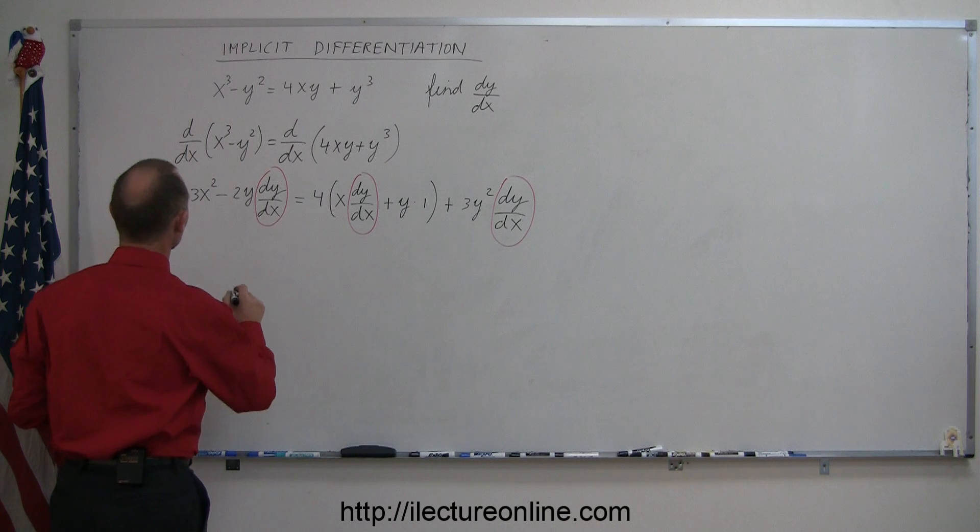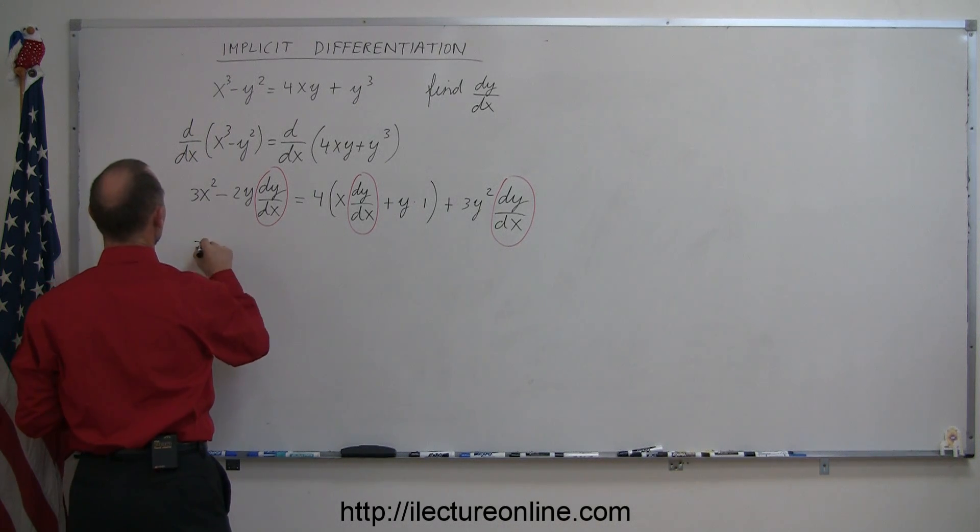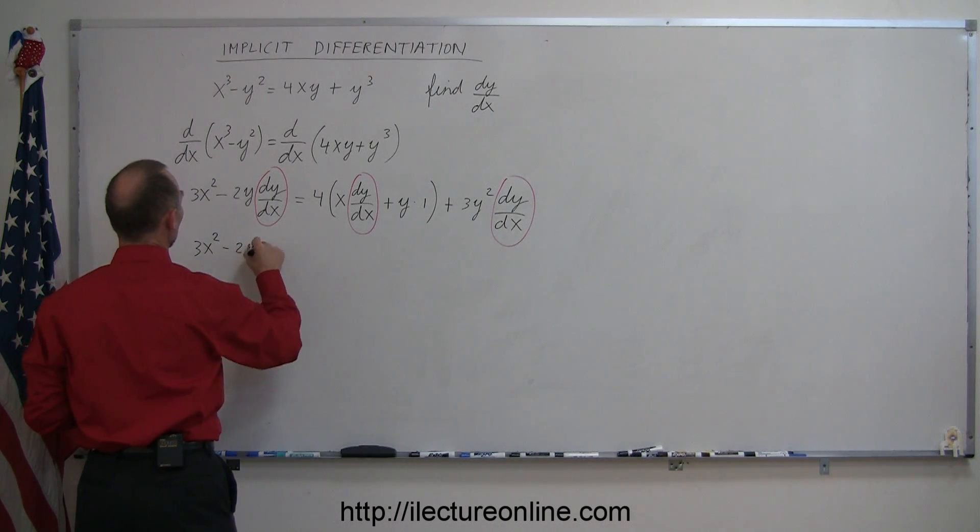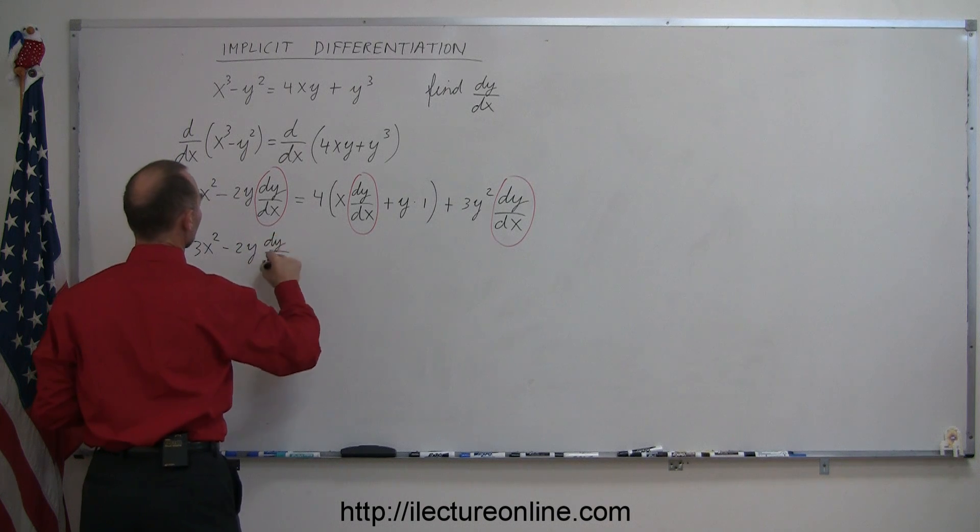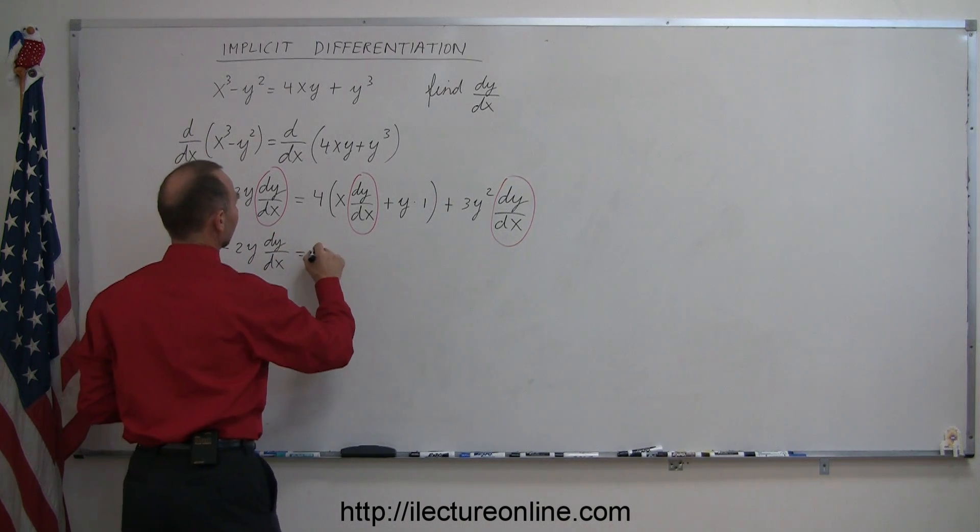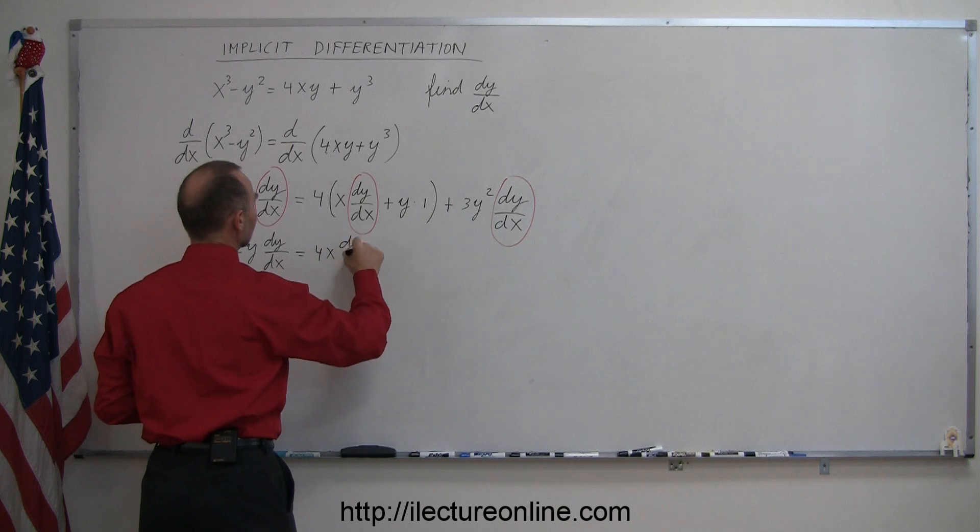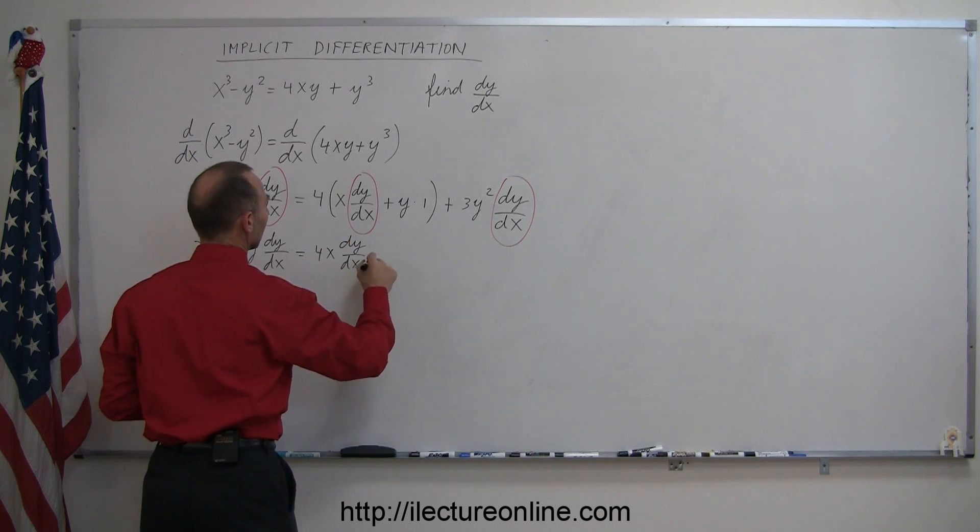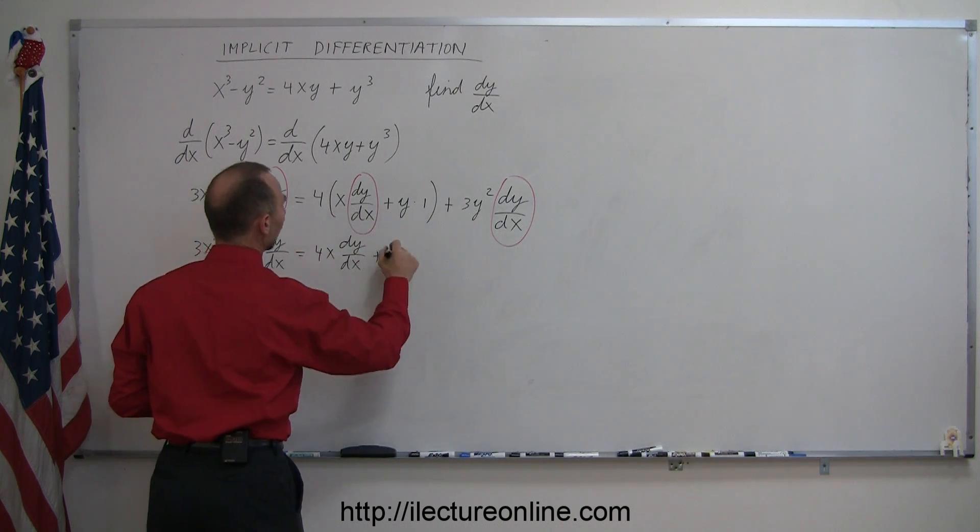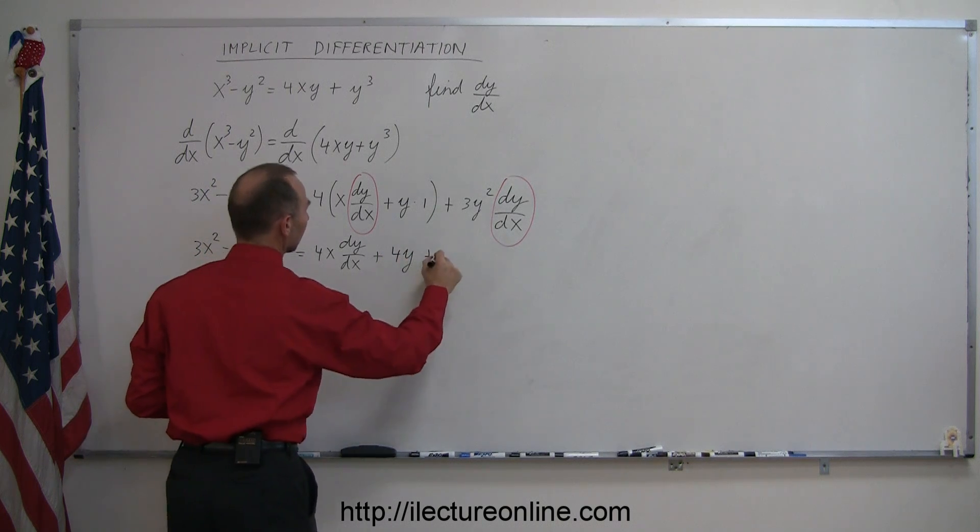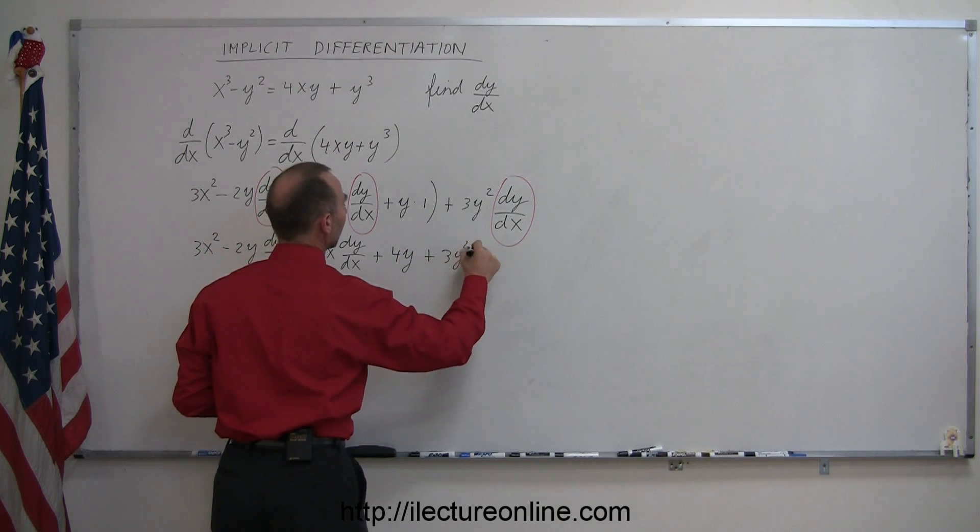So first I'm going to simplify things a little bit. So we have 3x² - 2y dy/dx equals 4x dy/dx plus 4 times y plus 3y² dy/dx.